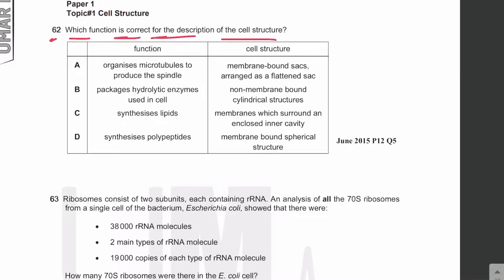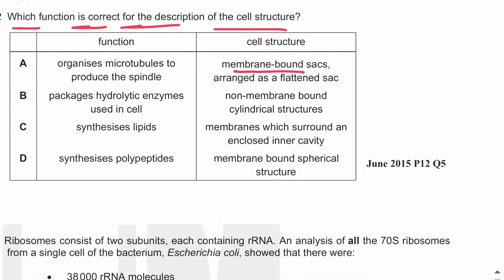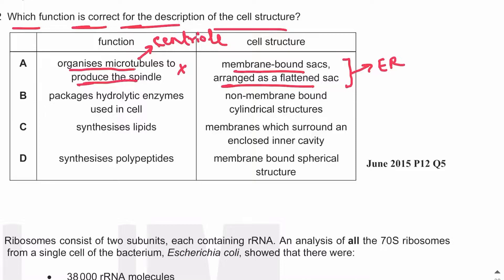MCQ 62: Which function is correct for the description of the cell structure? Membrane-bound sacs arranged as flattened sacs — these are endoplasmic reticulum. Option A is wrong because the cell structure does not match the description. Non-membrane bound cylindrical structures — these are centrioles, which organize microtubules to produce spindle fibers.